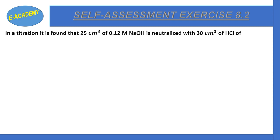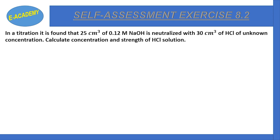In a titration, it is found that 25 cm³ of 0.12 molar sodium hydroxide is neutralized with 30 cm³ of hydrochloric acid of unknown concentration. Calculate the concentration and strength of the HCl solution. We have the NaOH volume and the HCl volume, but the concentration of HCl is unknown.